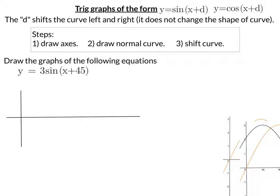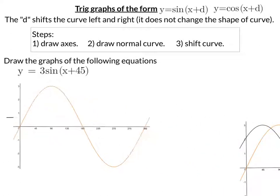Okay, here's our second graph. 3 sine brackets x plus 45. So draw the axis. Draw the normal curve.